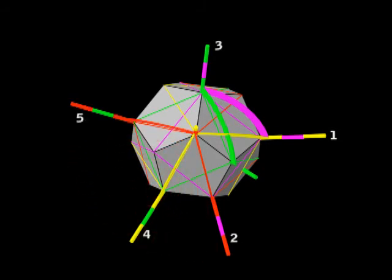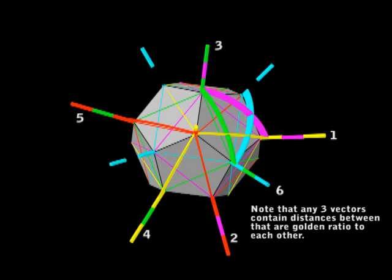Now if you study the way these vectors go, if you pick any 3, you will find at least one long edge, which is the length of the side of the cube, and then the short length. And this is always a golden ratio.